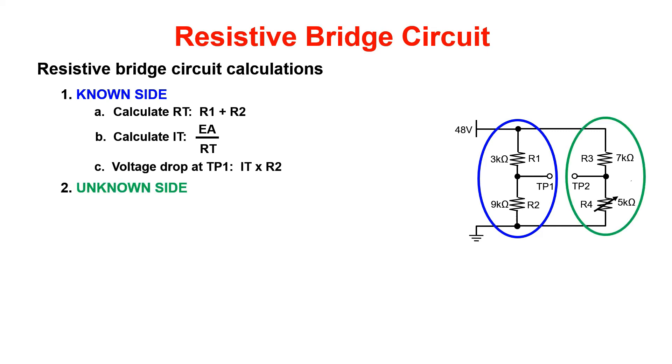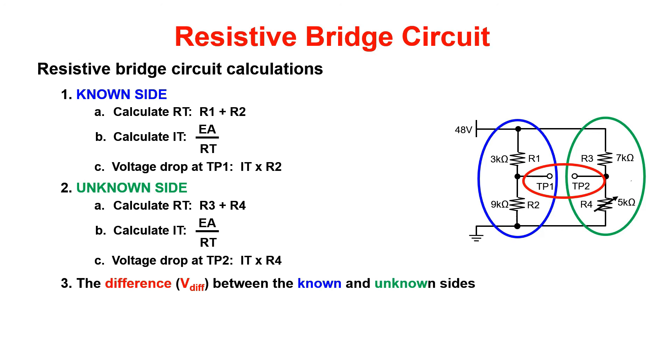Rinse and repeat for the unknown side using R3 and R4 to calculate RT. Now that you have the voltages at test point 1 and test point 2, perform the calculation TP2 minus TP1. And voila, you're done.